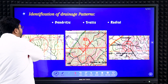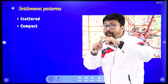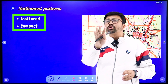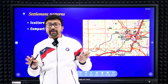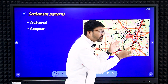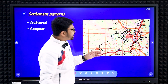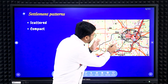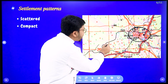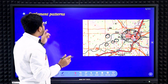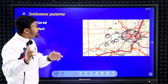Types of settlement — settlement is marked with red color boxes. According to the 2023 syllabus, there are two types: scattered and compact. Linear settlement is out of the syllabus now. Scattered settlement is also known as dispersed settlement; compact settlement is also known as cluster settlement. When red color boxes are very congested close together, that is cluster or compact settlement. When the red boxes are far apart from each other, that is scattered or dispersed settlement.